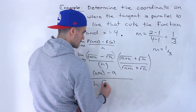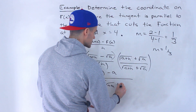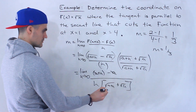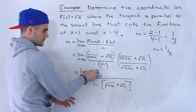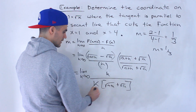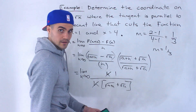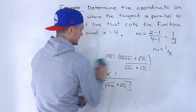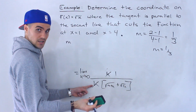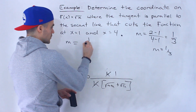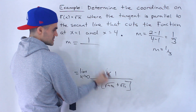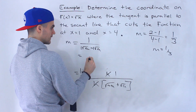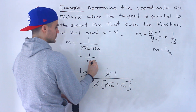Notice the a's cancel out, so we're left with h at the top. Then the h's cancel out, and we're just left with a 1 at the top. Now we can plug in 0 for h. What we end up getting is 1 over (√a + √a), and since those are like terms, we add the coefficients to get 1 / (2√a).